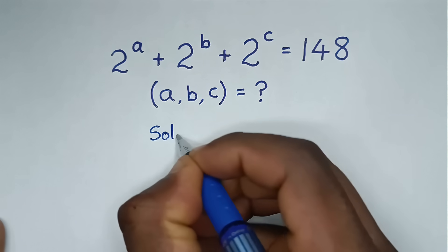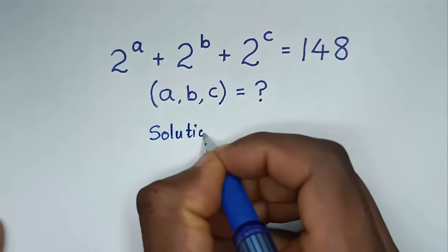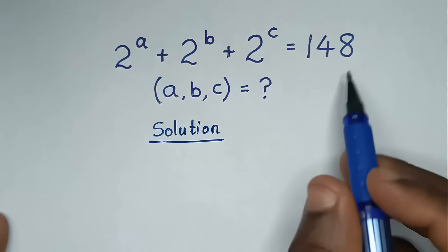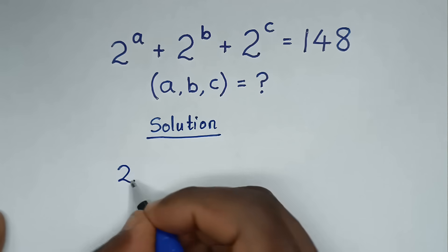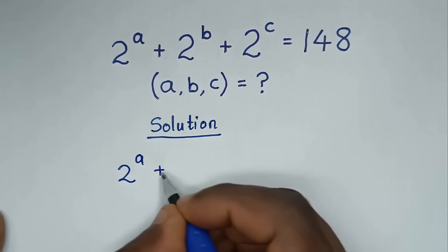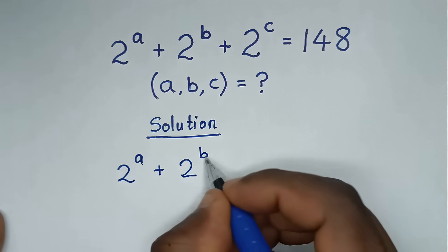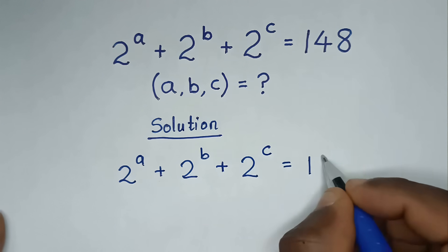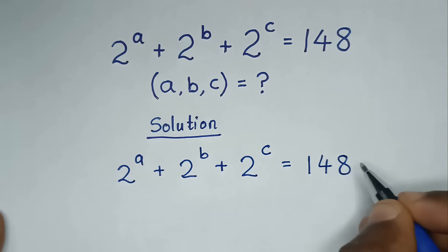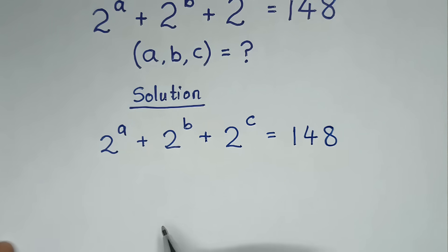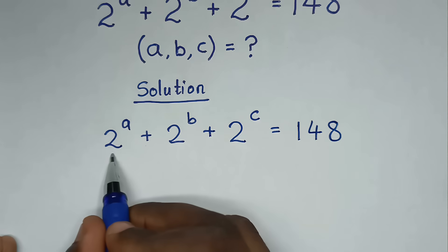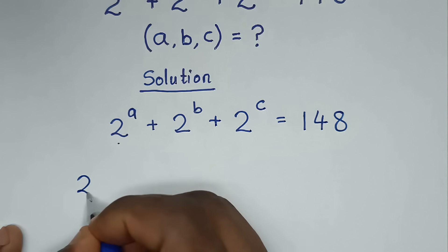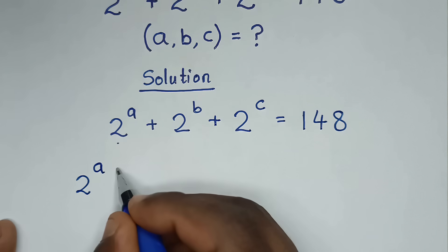Now, solution. From this problem, which is 2 power of A plus 2 power of B plus 2 power of C is equal to 148. In the first step, we will divide by 2 power of A on this side, so we take 2 power of A outside of the bracket.